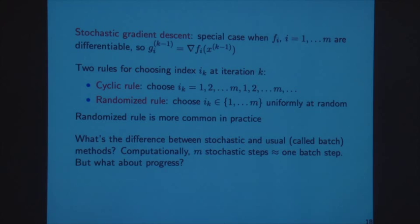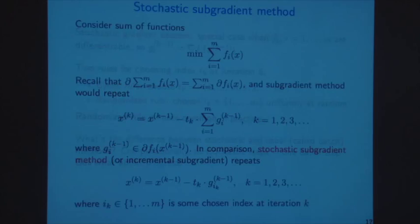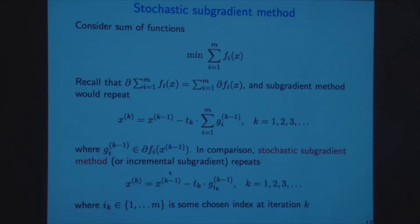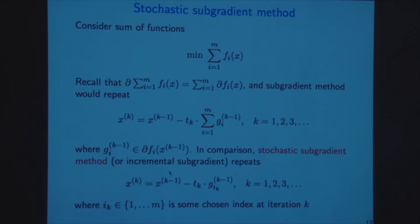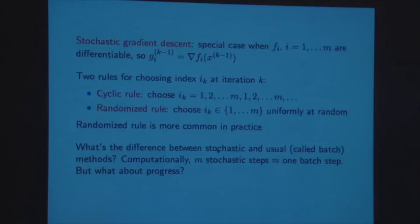We went through a calculation showing that M stochastic steps are computationally the same as one usual batch step, because we compute one subgradient per iteration versus M per iteration. So if we ask about the progress made over M stochastic steps versus one batch step, that was the comparison we did last time.